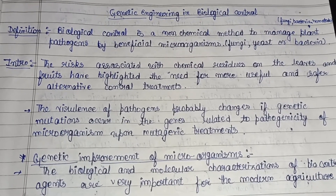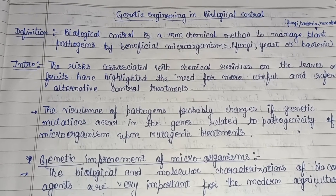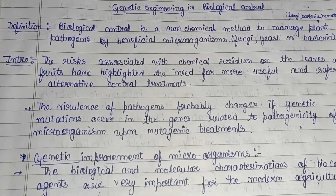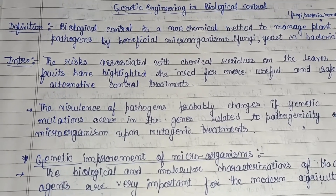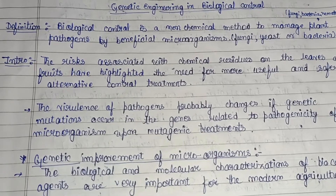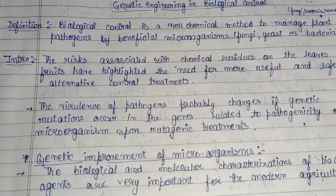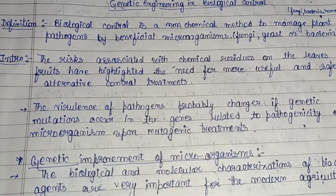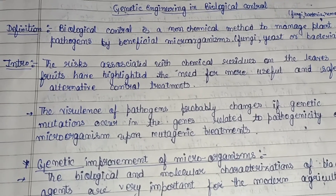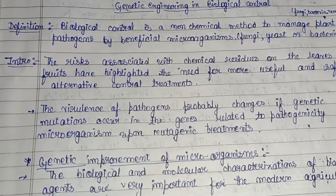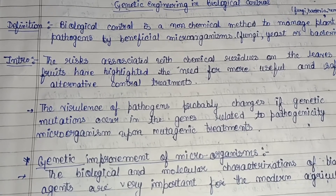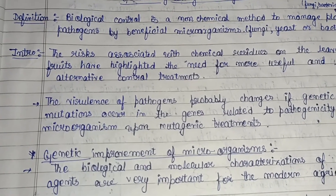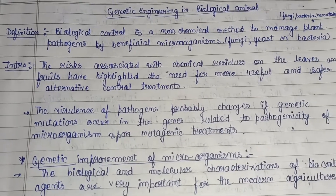Welcome back to the channel. Today's topic is genetic engineering in biological control — how genetic engineering as a technique is utilized for biological control methods. Biological control is a non-chemical method that does not require chemicals to manage plant pathogens — agents that cause disease in plants, like fungi, bacteria, and nematodes — by using beneficial microorganisms such as fungi, yeast, or bacteria.